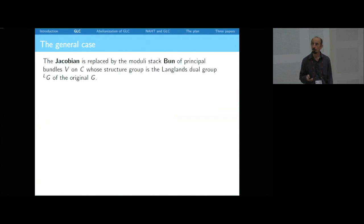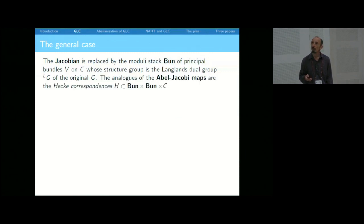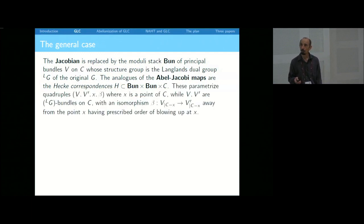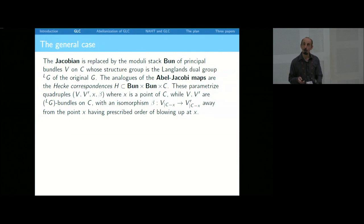You replace the Jacobian by the modular stack of all principal G-bundles, where the structure group is not the original G but its Langlands dual. The analog of the Abel-Jacobi map is no longer a map but a correspondence — a sub-variety of the product. It's a set of triples V, V-prime, and X, such that there exists a beta which is an isomorphism from V to V-prime, allowed to blow up at the unique point X and defined everywhere else. So Hecke is the set of all modifications of V based at the point X.